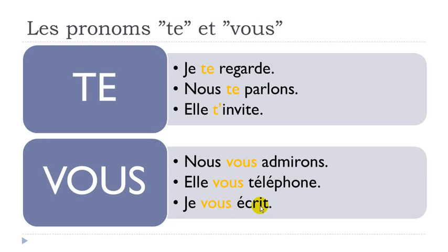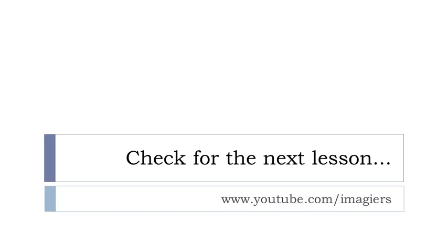Let's read them all one more time: JE TE REGARDE. NOUS TE PARLONS. ELLE T'INVITE. NOUS VOUS ADMIRONS. ELLE VOUS TÉLÉPHONE. JE VOUS ÉCRIS. Remember these pronouns — we'll make other lessons for pronouns because they are used quite often in French. The key rule is that pronouns will always come before the verb. Remember that because it will be quite useful. That's it for Leçon I. You can check the next lesson on YouTube — the channel is Imagier. Have a great day. Bye-bye.